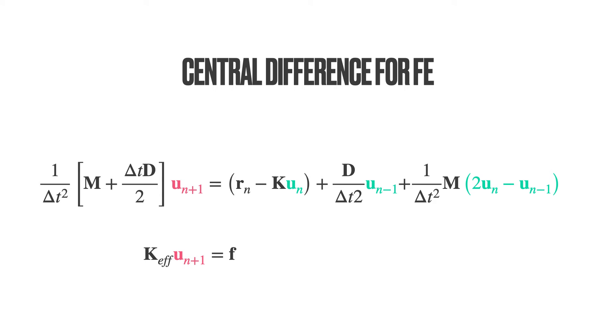Thus, we have a formula for recursively computing the new displacements of the structural system. All we need is a for loop within the finite element code that updates the displacements. In static analysis, you know the expression ku equals f. Here we solve an analogous ku equals f for each time step.